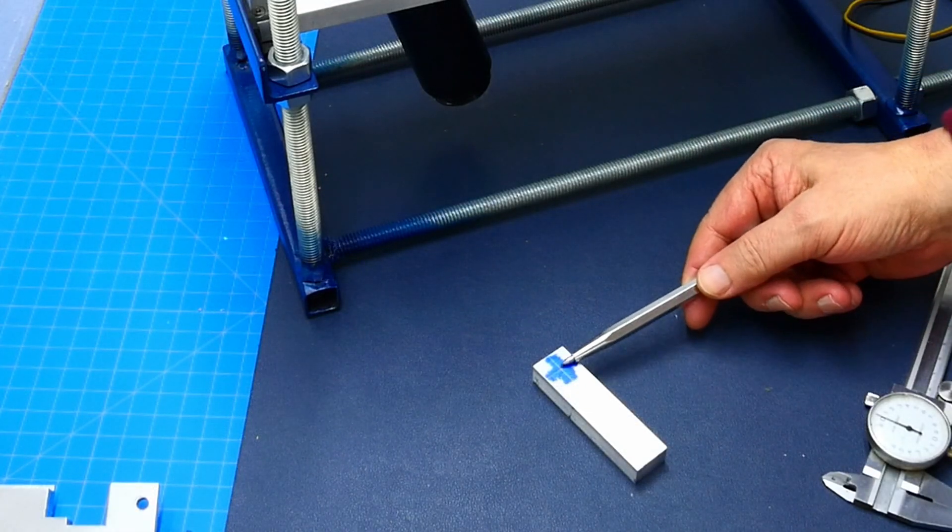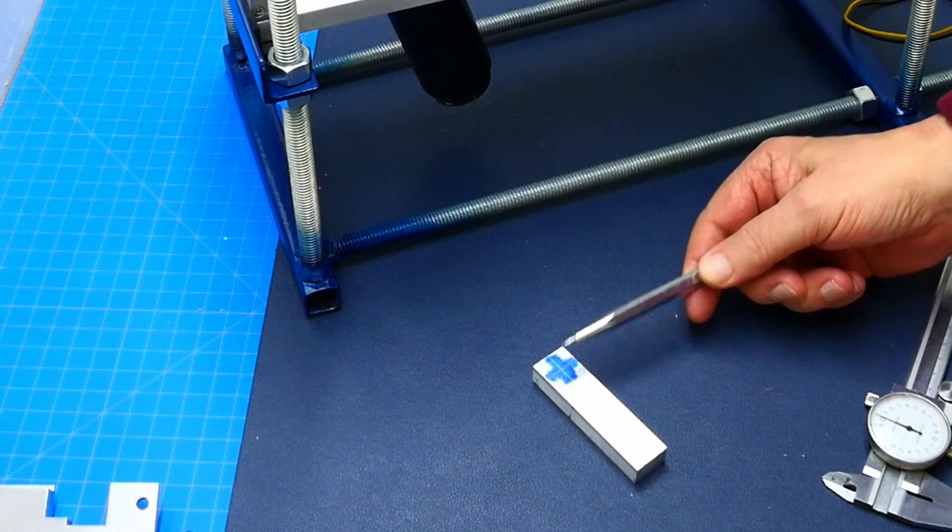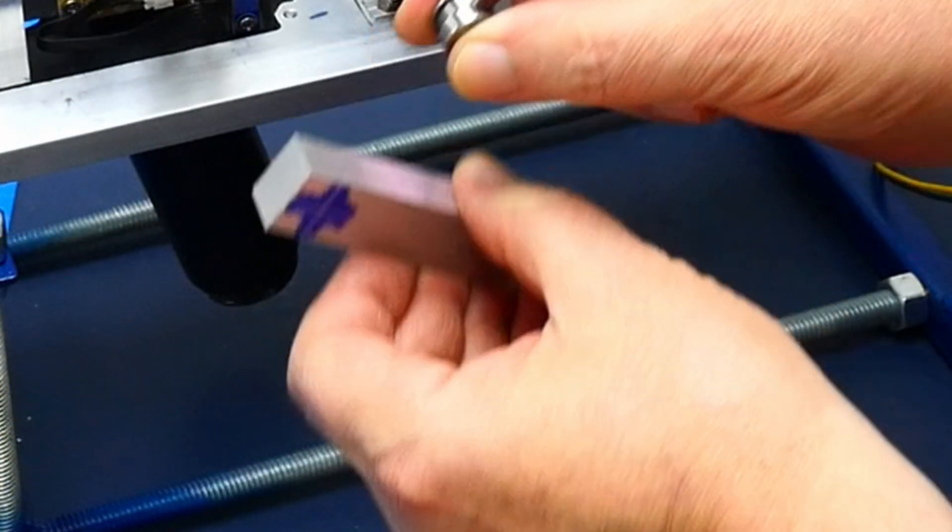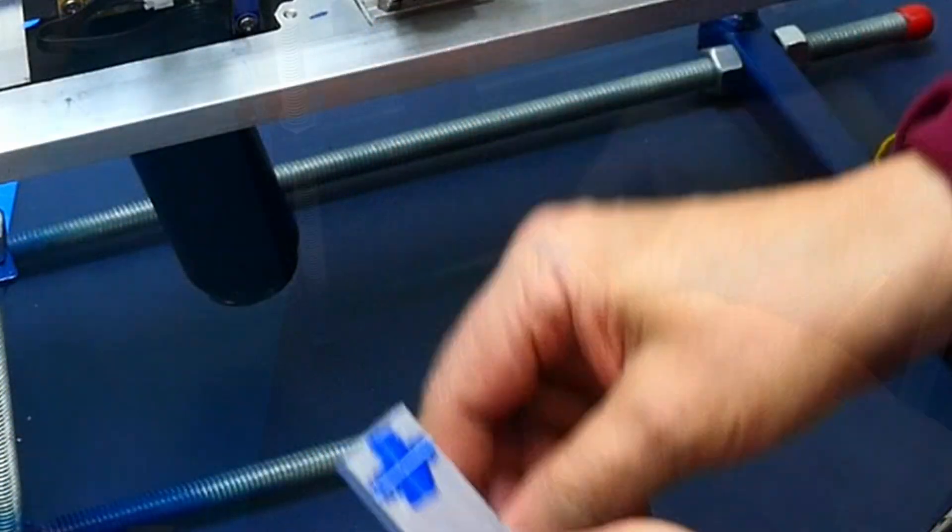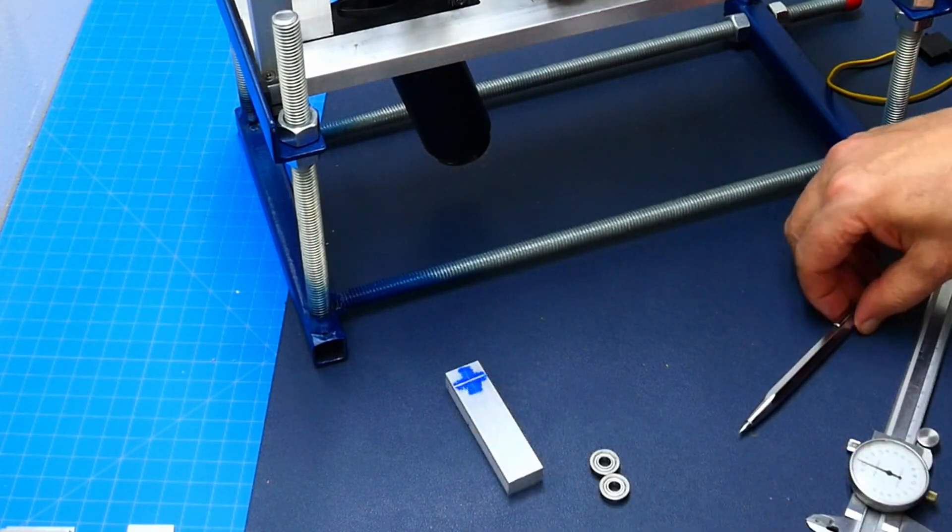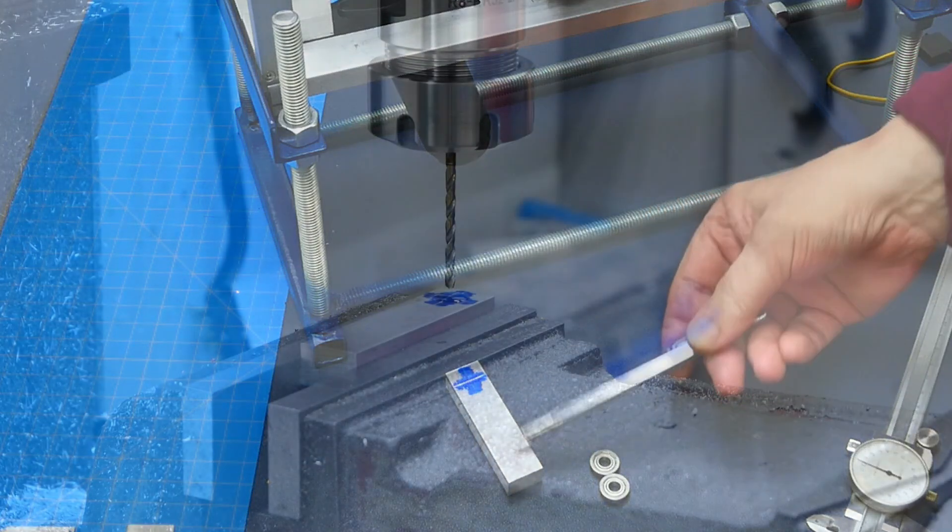Mill this piece out for bearings. So first, here's two bearings. They're five millimeter bearings. And this one has to be as thick as that. So I have to take a little bit off. And then I'm going to press fit those bearings in there. And then I'm going to drill holes in here and in here.